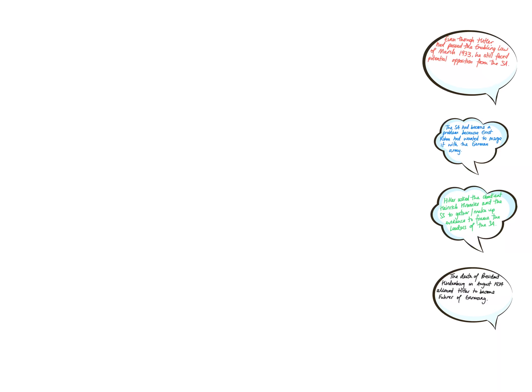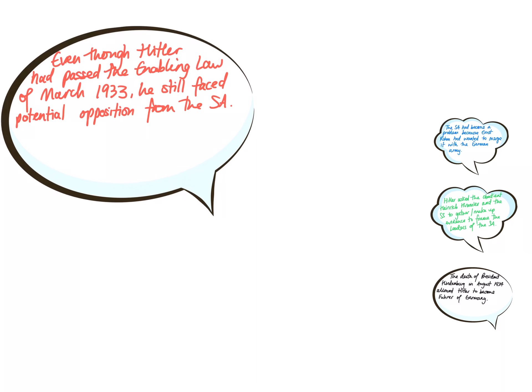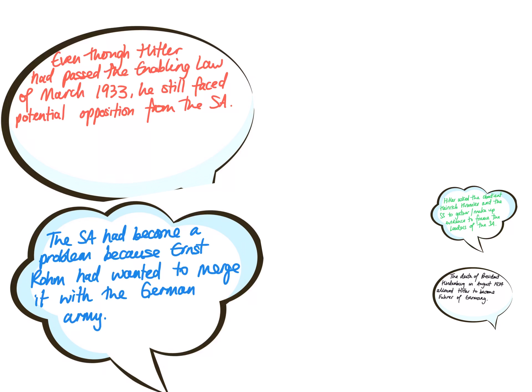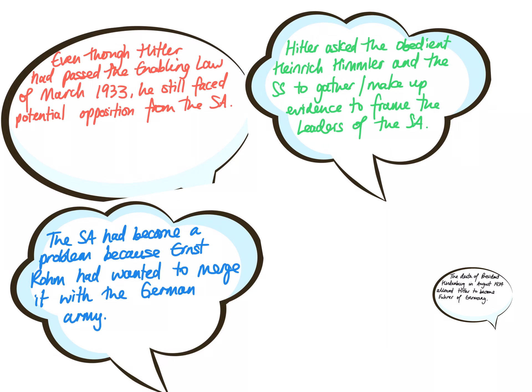In summary, even though Hitler had passed the Enabling Act in March 1933, he still faced potential opposition from the SA. The SA had become such a problem because Ernst Röhm wanted to merge it with the German army, which upset the German generals. The 2.9 million men had also become increasingly violent throughout 1934, damaging Hitler's image. So Hitler asked the obedient Heinrich Himmler and the SS to gather and make up evidence to frame the SA leaders, making it appear as though they wanted to take over the country.